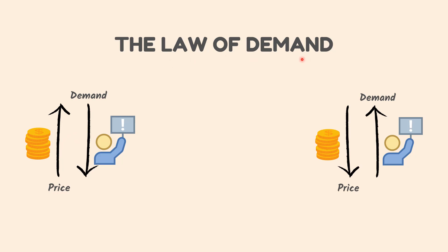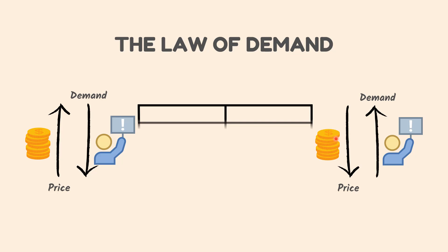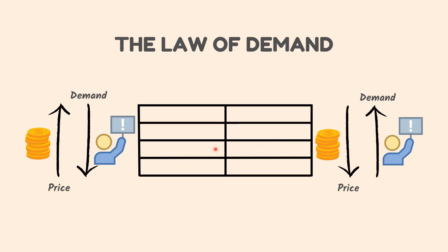Demand can be seen to change for reasons other than price. Let's see a table here for better understanding. When the price of a good is $10, the quantity demanded is 50. When the price is increased to $20, people will buy less as the price increased, so the quantity demanded falls. When the price again increases to $30, the quantity demanded falls to 50. As the price increases, more consumers stop buying the good.